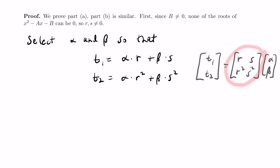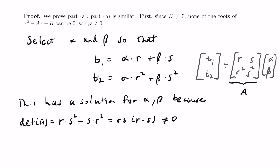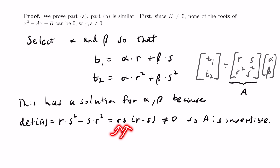We can verify that the determinant is non-zero. If we call this matrix A, the determinant of A is r times s squared minus s times r squared, which equals r·s times (r minus s). This is not zero: from our assumption that b is not zero, both r and s are nonzero, and since r and s are different roots, (r minus s) is also nonzero. So the determinant is nonzero, meaning A is invertible, and we can solve the system.